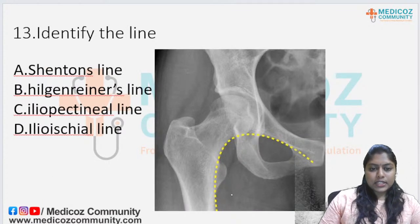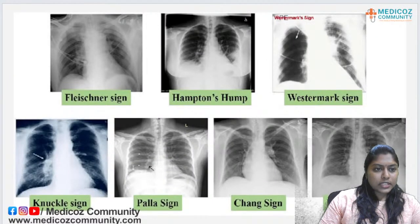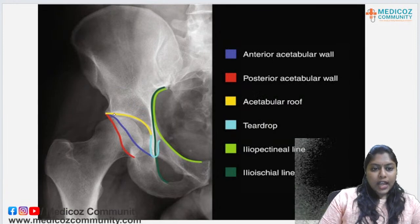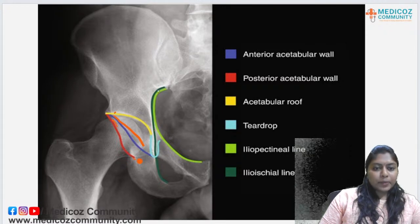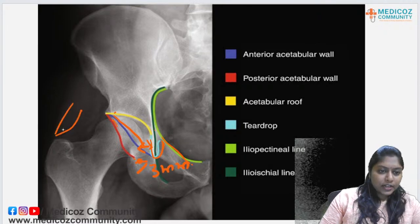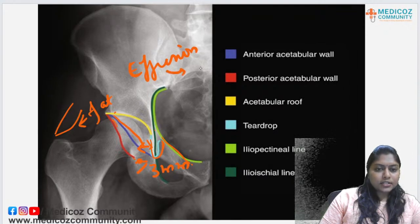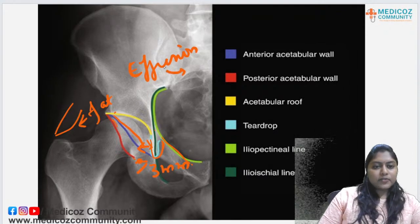Question 13 — identify the line: it runs from the lesser trochanter to the neck and onto the ischium — this is Shenton's line. Other hip X-ray lines include the anterior and posterior acetabular lines, the acetabular roof, iliopectineal line, and the teardrop. The teardrop is important: if the distance between the teardrop and the femoral head is greater than 3 mm, assess fat planes for elevation, which if present suggests effusion — common in septic arthritis.